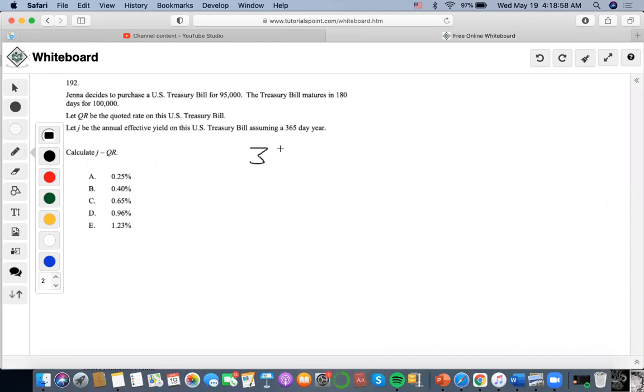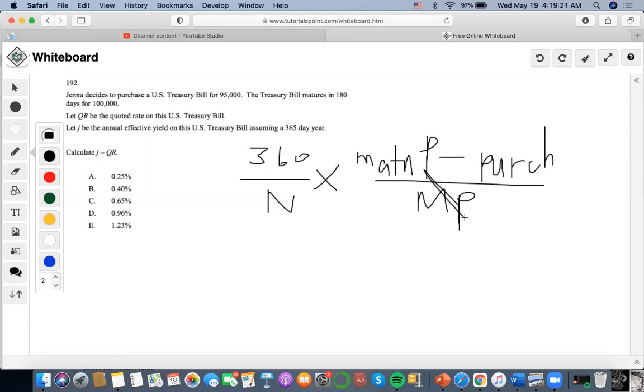It is 360 divided by number of days to maturity times maturity price minus purchase price over maturity price. So these are the same variables.